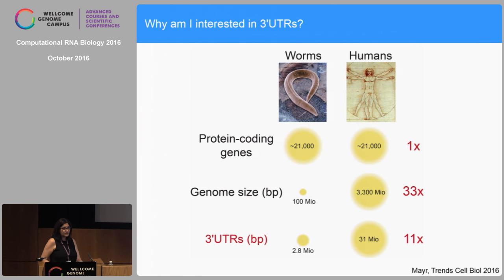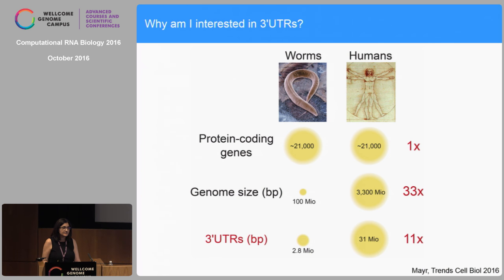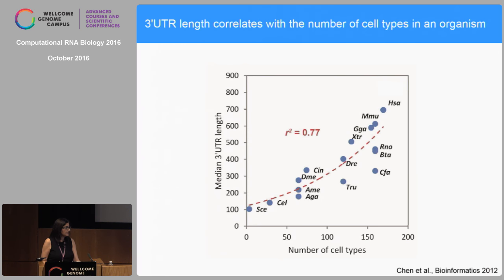Why am I interested in 3' UTRs? When the human genome was sequenced, people were very surprised to find that the number of protein-coding genes is very similar to the number in C. elegans. However, genome size is much larger. This led to the notion that there are a lot of non-coding elements in the human genome that are really important for functions of higher organisms. One part of the non-coding genome are 3' UTRs, and the space occupied by 3' UTRs is over 10 times larger in humans than in C. elegans.